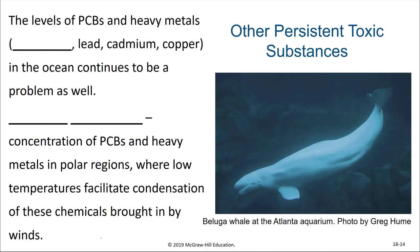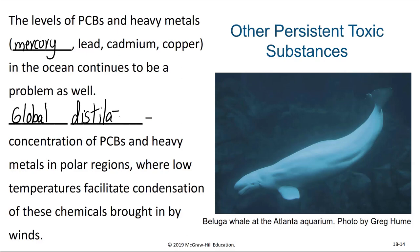The levels of PCBs and heavy metals such as mercury, lead, cadmium, and copper in the oceans continue to be a problem. There is also a process known as global distillation, in which the concentration of PCBs and heavy metals is found primarily in the polar regions, where cold temperatures facilitate condensation of these chemicals brought in by the winds. So populations with little direct human contact can still be negatively impacted by pollution generated by humans hundreds or even thousands of miles away.